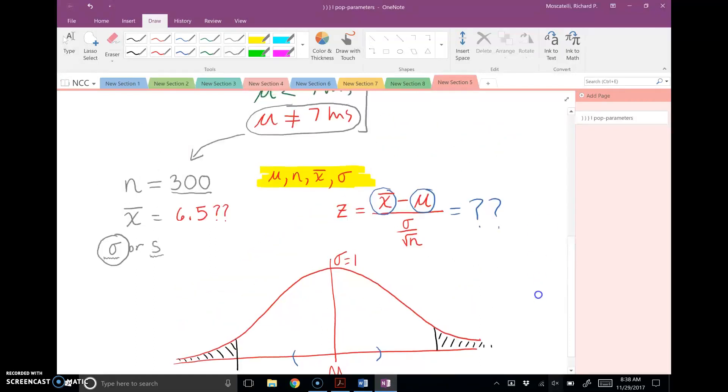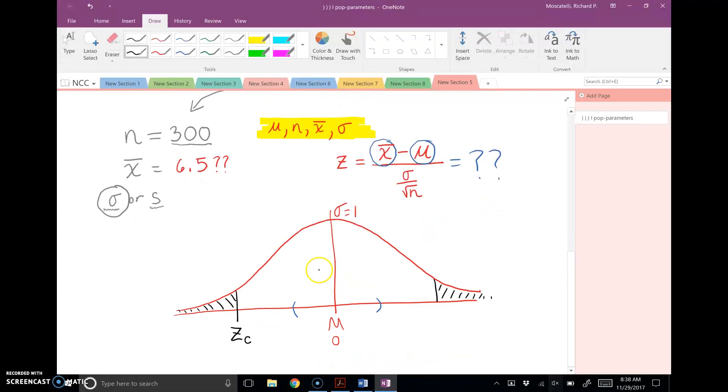So let's give a confidence. Let's put some confidence in the middle here. I'll put 0.95 in the middle here. So if that's 95% in the confidence region, then obviously alpha, the level of significance, is 5%.